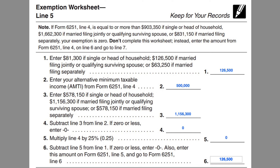In this video, we'll be going over the exemption worksheet for line 5 of your IRS Form 6251, Alternative Minimum Tax. The amount that you calculate in this worksheet represents the exemption that you may be able to claim when you're completing the tax form, so that you can exclude certain amounts from AMT.